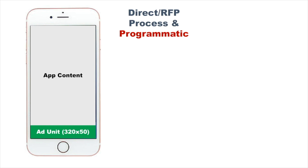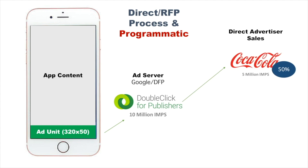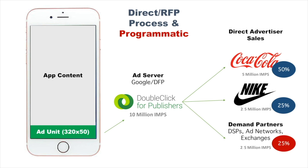ESPN is huge and can demand an audience with some of the biggest advertisers in the world. So what they're going to do is a combination of the direct RFP process and programmatic. Same app, same ad space, same impressions, same ad server — but as ESPN, you can go direct to Coca-Cola and they might buy half your ads in a month, and Nike might buy 25%. Then you bring in your programmatic partners, who have demand and advertisers on the back end, to fill that remaining 25%. At the end of the month, if you have 10 million impressions available, you sell all 10 million — or as close to 100% fill as possible.